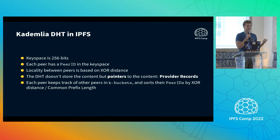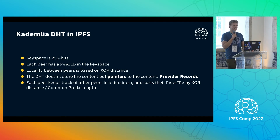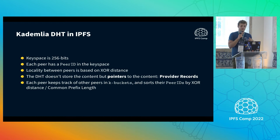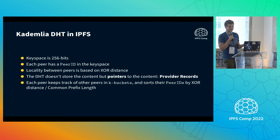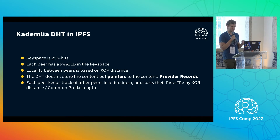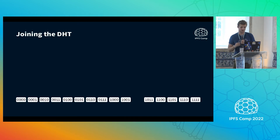The way we keep track of peers is that each peer sorts the other peers it knows by logarithmic XOR distance and stores them in what we call K-buckets. I'm going to focus a bit more on this.